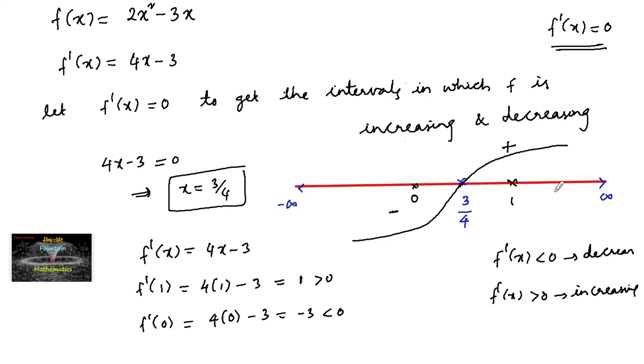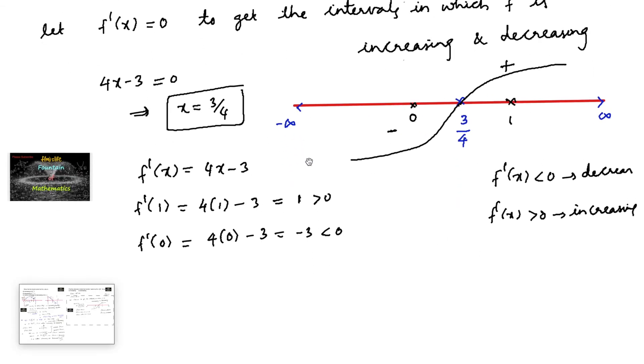So above 3/4 it is positive. It is divided into two intervals: 3/4 to infinity is one interval, and minus infinity to 3/4 is another interval.